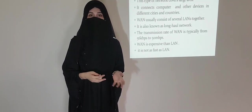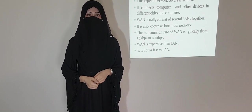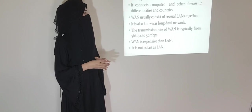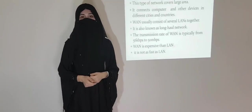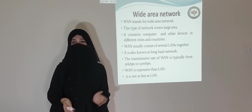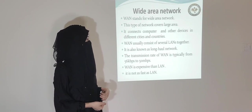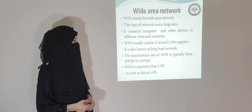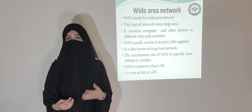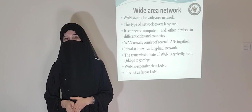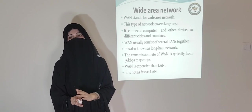The next type is Wide Area Network, which is also a type of computer network. WAN stands for Wide Area Network; this network covers a large area and connects computers and many devices within cities or countries. WAN usually consists of several LANs together and is also called a long-haul network. The data transmission rate of WAN is 56 kilobit per second to 50 megabit per second. WAN is expensive but not as fast as LAN, because it covers a large area whereas LAN only covers an office or a building.